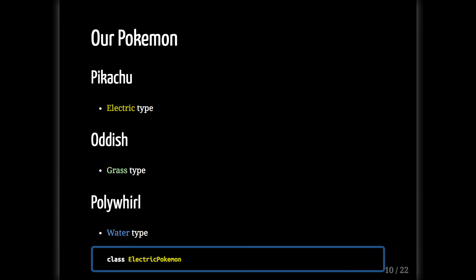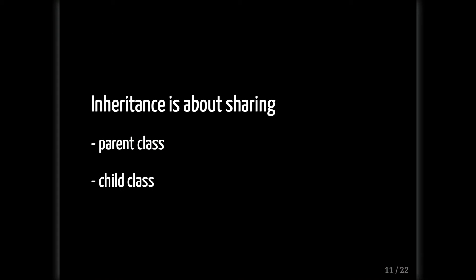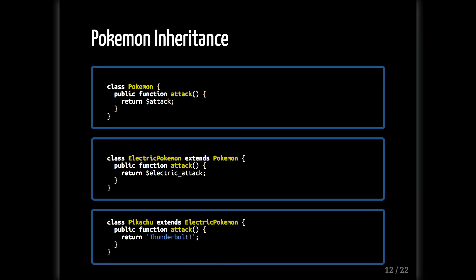There's an OOP concept that makes this really easy — it's called inheritance. Inheritance is all about sharing. You have a parent class that has some attributes and methods, and then child classes that basically absorb the parent class and build upon it. In our Pokemon example, we take the Pokemon class and create a specific class like ElectricPokemon, giving it more attributes or methods that a generic Pokemon wouldn't have. In the code, we have class ElectricPokemon which uses the keyword 'extends', telling you it's inheriting from the Pokemon class, and it overrides the attack function with a special electric attack. Then class Pikachu extends ElectricPokemon and overrides the same parent function with a special thunderbolt attack.